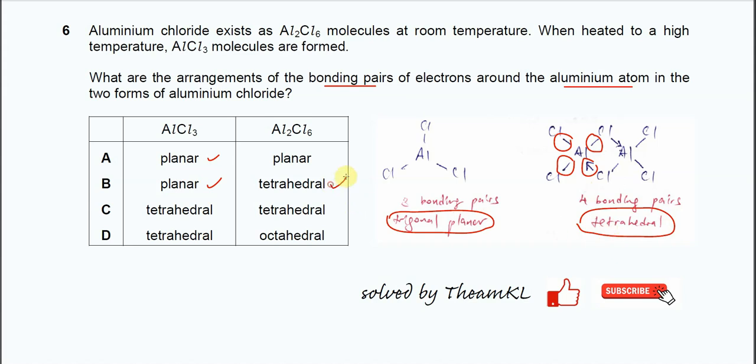Answer confirmed is B. AlCl3 is planar and Al2Cl6 is tetrahedral. Okay, that's all. Thank you.